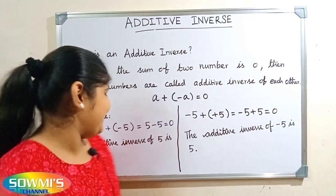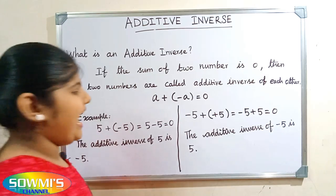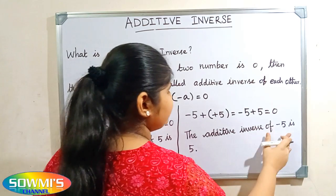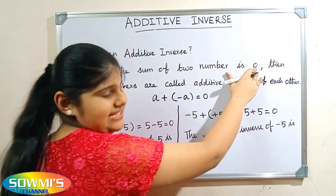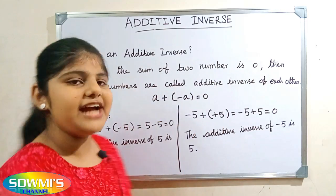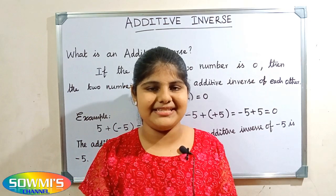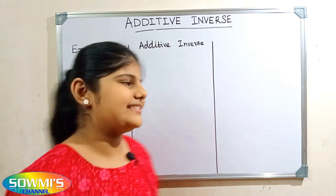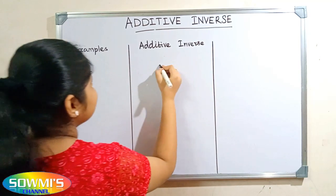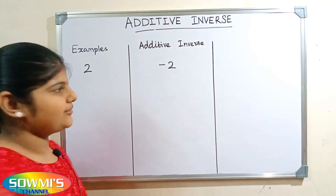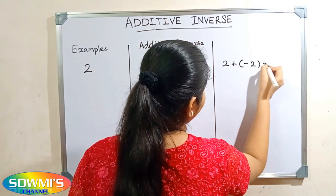So, you can see here the additive inverse of five is minus five, and the additive inverse of minus five is five. The sum of two numbers is zero, then the two numbers are called additive inverse of each other. Now we will take some more examples. For example, we can take two. The additive inverse of two is minus two. According to the property,